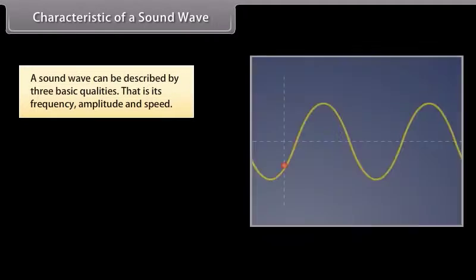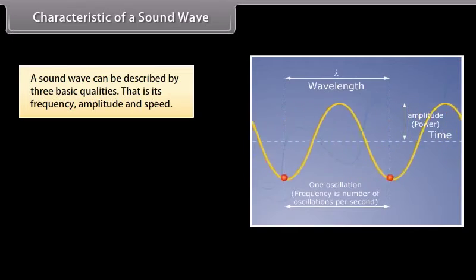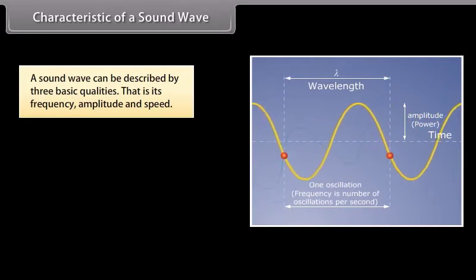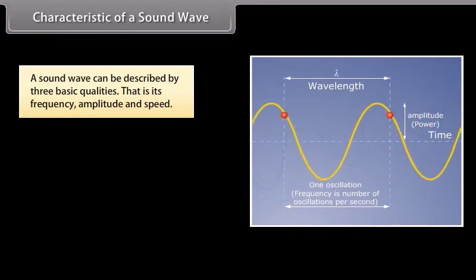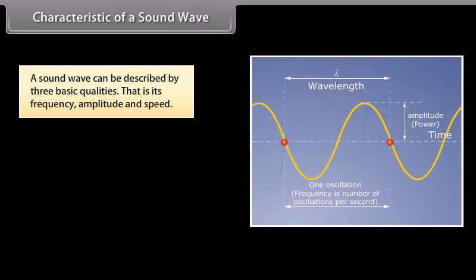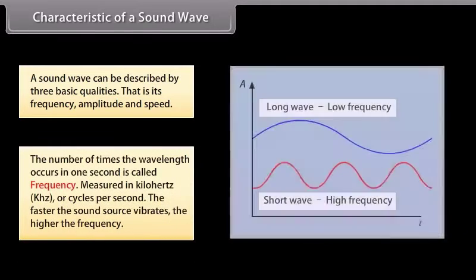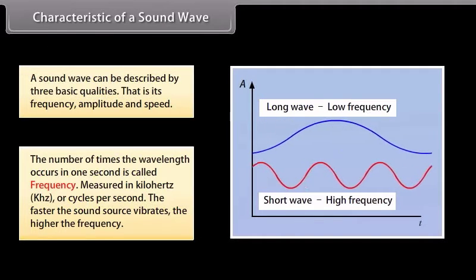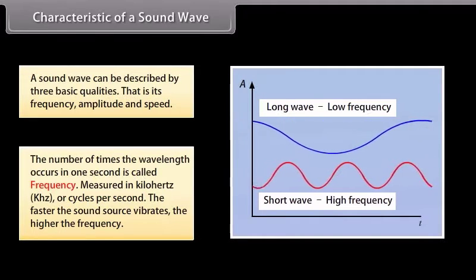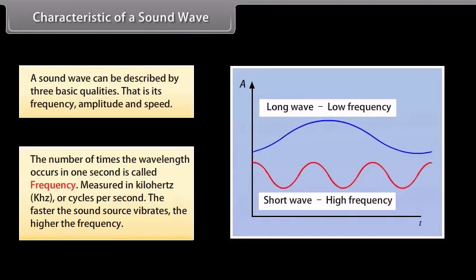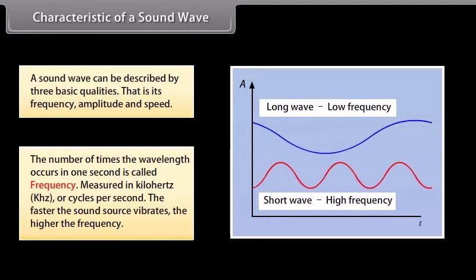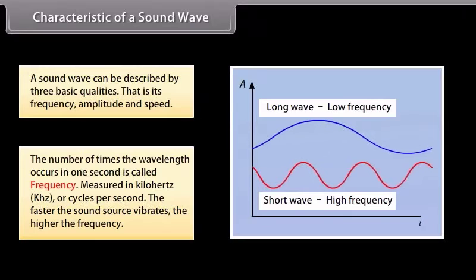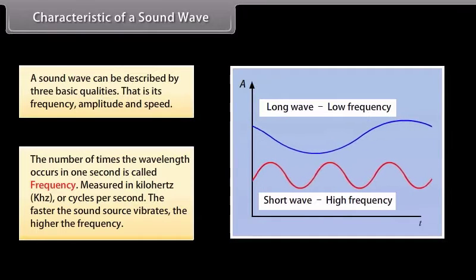Characteristics of a sound wave. A sound wave can be described by three basic qualities: that is, its frequency, amplitude, and speed. The number of times the wavelength occurs in one second is called frequency. It is measured in kilohertz or cycles per second. The faster the sound source vibrates, the higher the frequency.